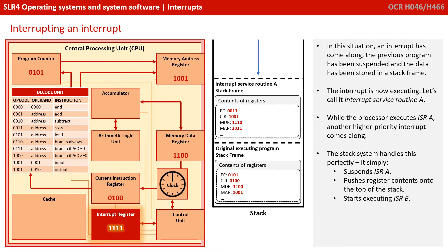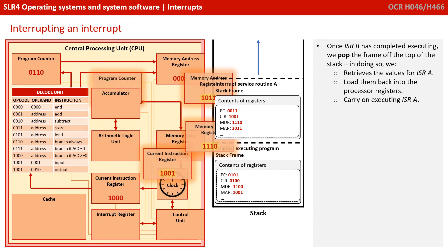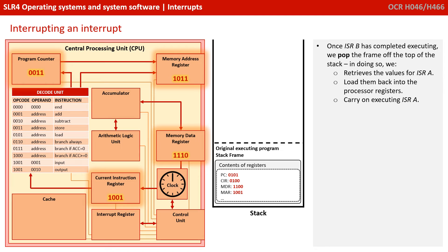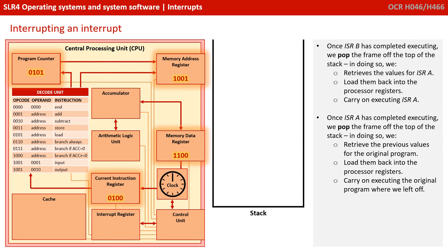We simply suspend interrupt service routine A and push the register contents onto the top of the stack. We now start executing interrupt service routine B. Once interrupt service routine B has completed executing, we pop the frame that's on the top of the stack, retrieve the values for interrupt service routine A, load them back into the registers, and carry on executing it. Once interrupt service routine A has completed executing, we pop the frame on the top of the stack, retrieve the previous values for the original program, load them back into the registers, and carry on exactly where we left off.